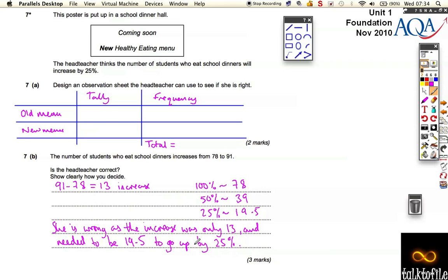So if it had to go up by 19.5 or 19 or 20 pupils, but it didn't, it only went up by 13 pupils. So she was wrong.